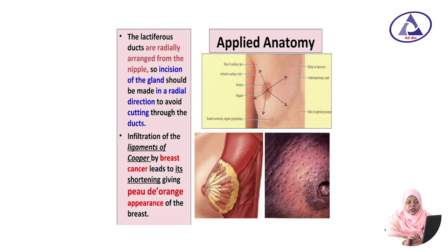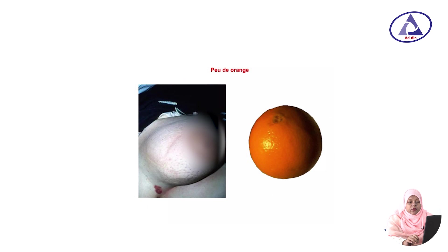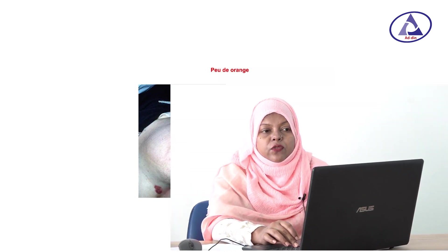Peau d'orange is a very important sign of carcinoma. It is a French term — 'peau d'orange' means orange peel. This occurs because some areas are swollen due to lymphatic infiltration and lymphatic obstruction, while other areas show skin retraction due to infiltration of the ligaments of Cooper. A picture of peau d'orange is shown. Thank you very much — that is all about breast anatomy.